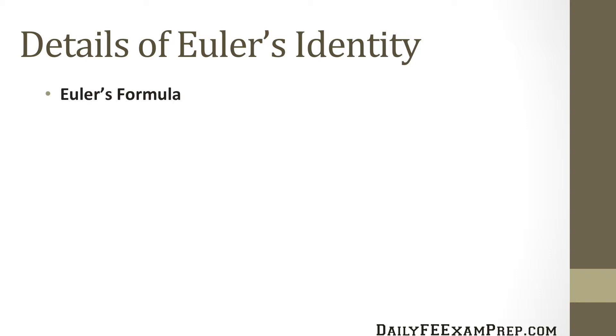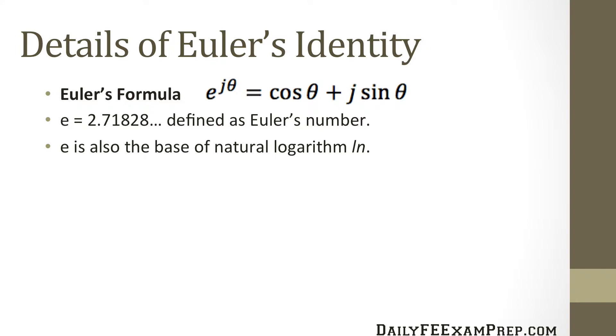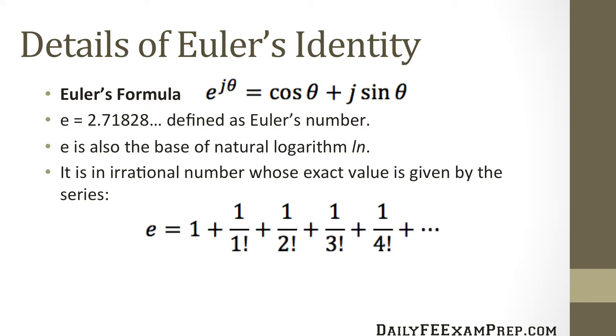Now the details of Euler's identity. Euler's formula is defined as e raised to the j theta equals cosine theta plus j sine theta, and e equals 2.71828, also defined as Euler's number. E is also the base of natural logarithm ln. It's an irrational number whose exact value is given by the series e equals 1 plus 1 divided by 1 factorial plus 1 divided by 2 factorial and so on and so forth.